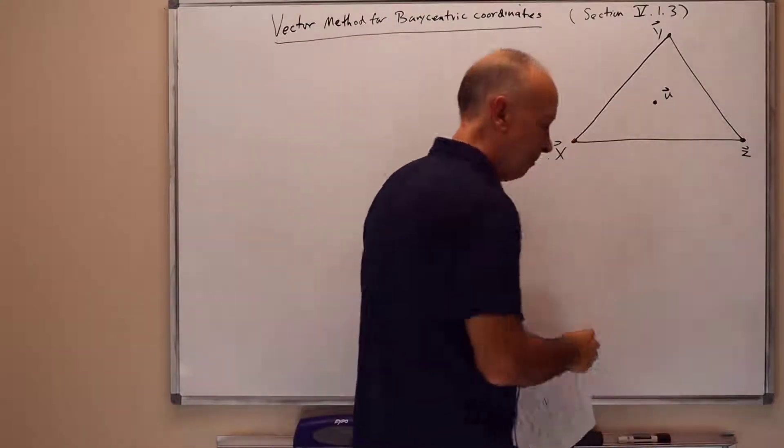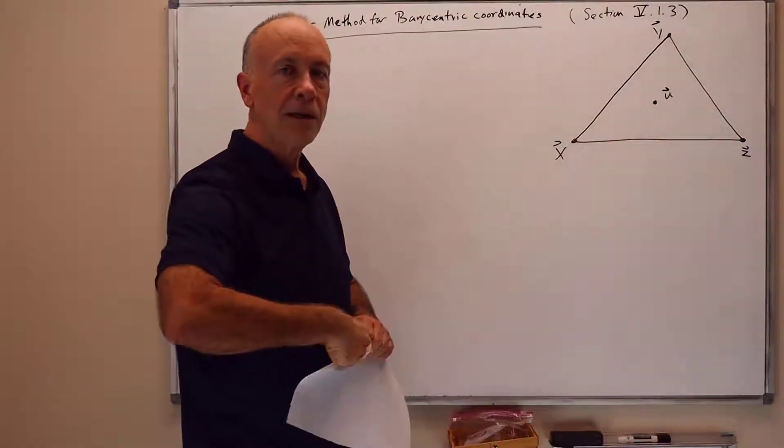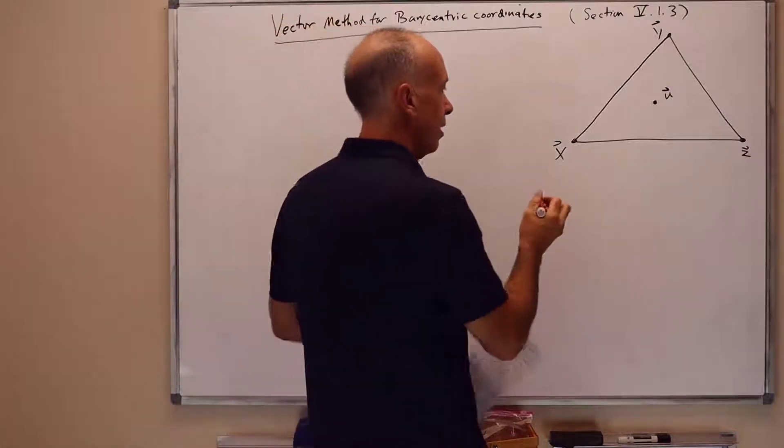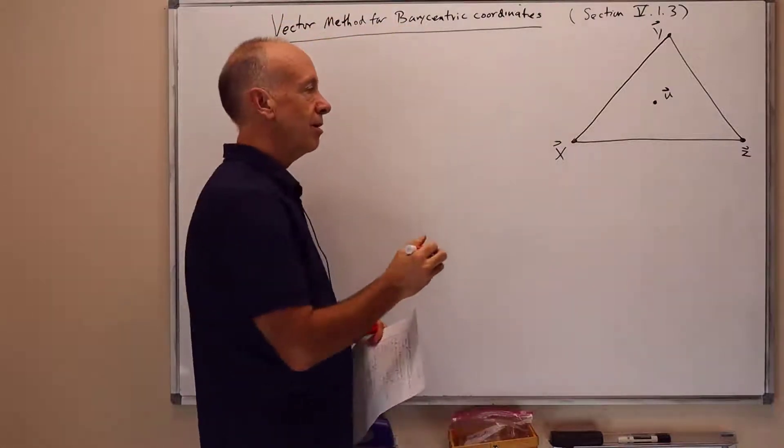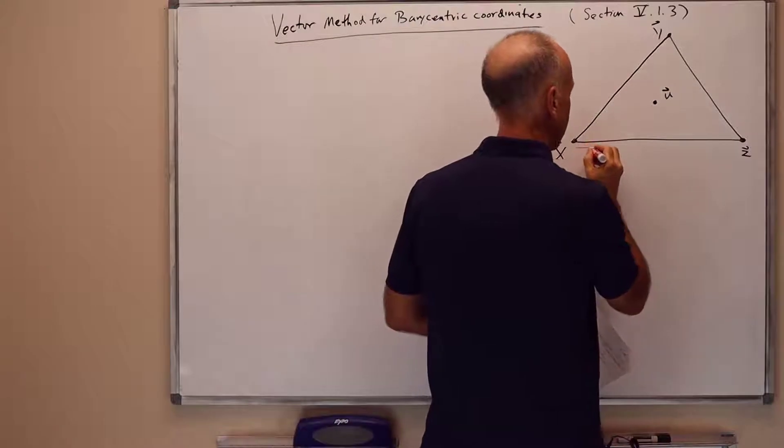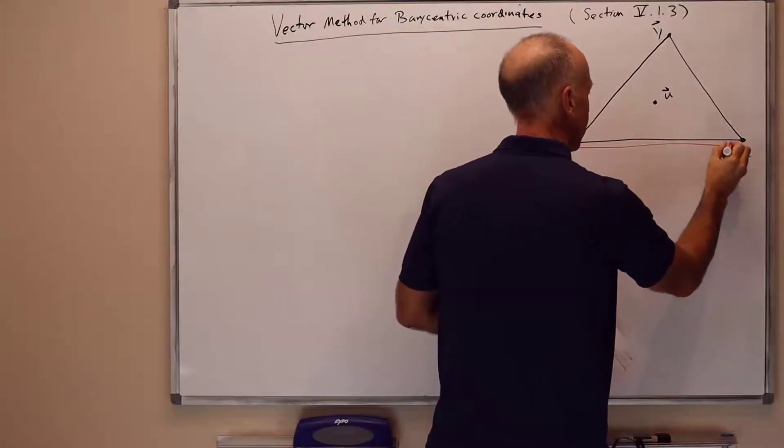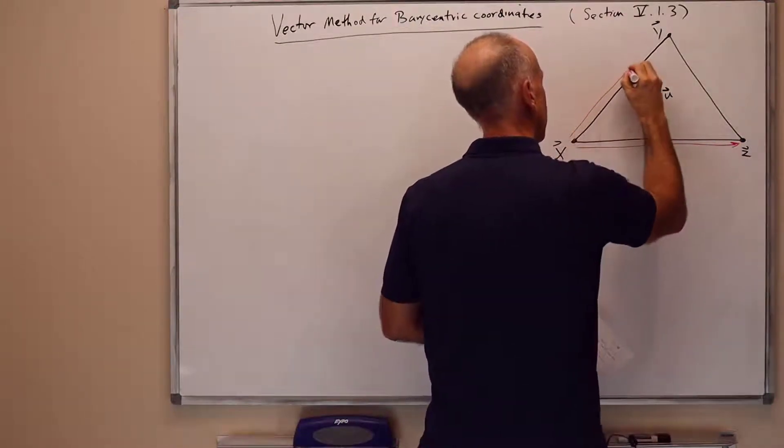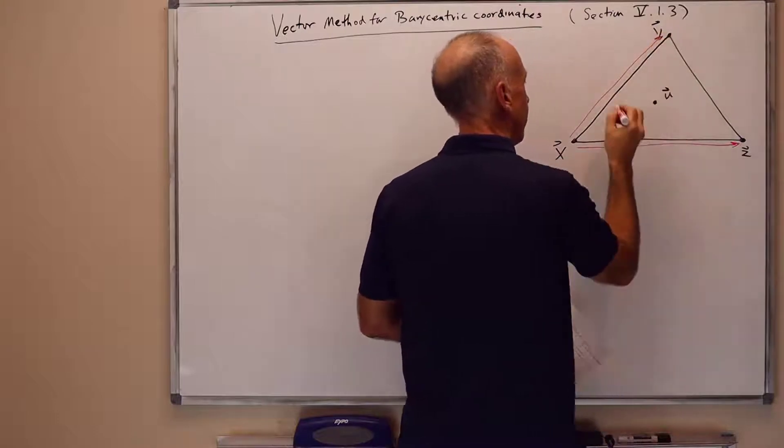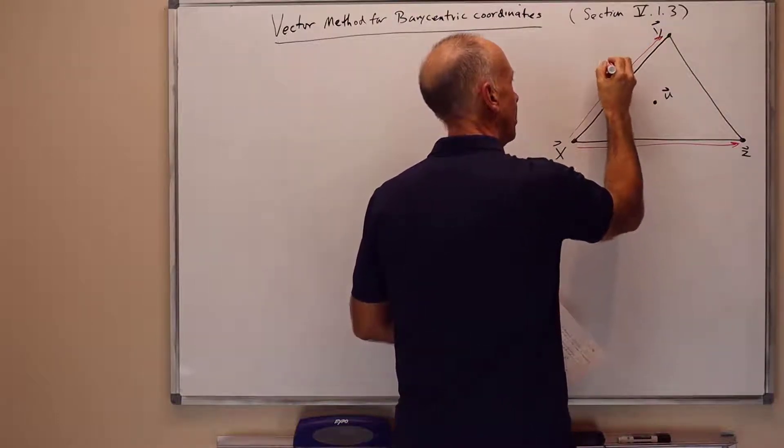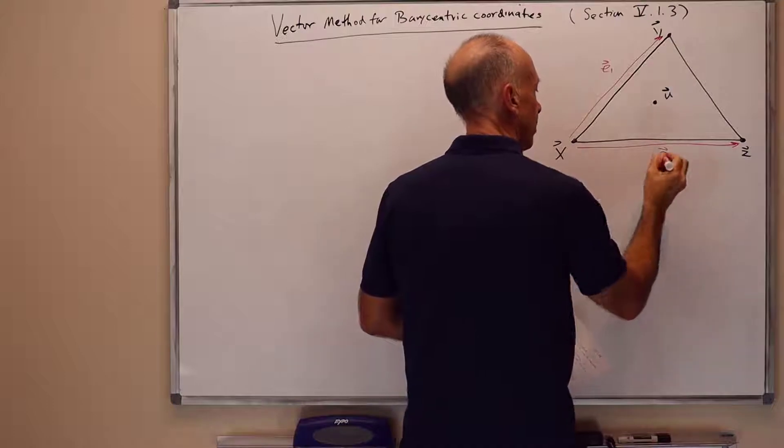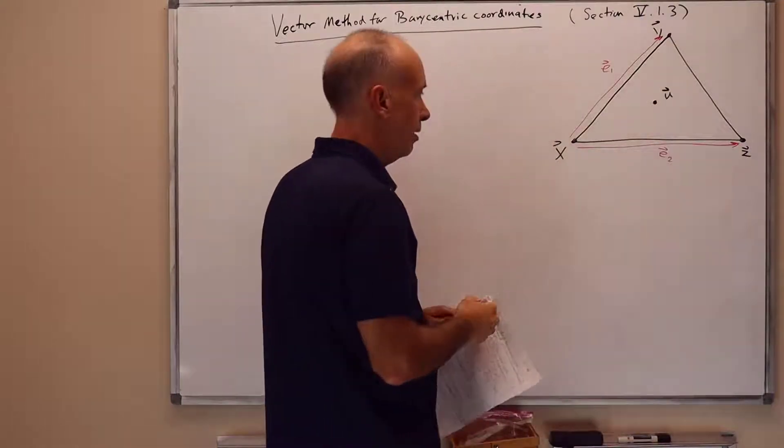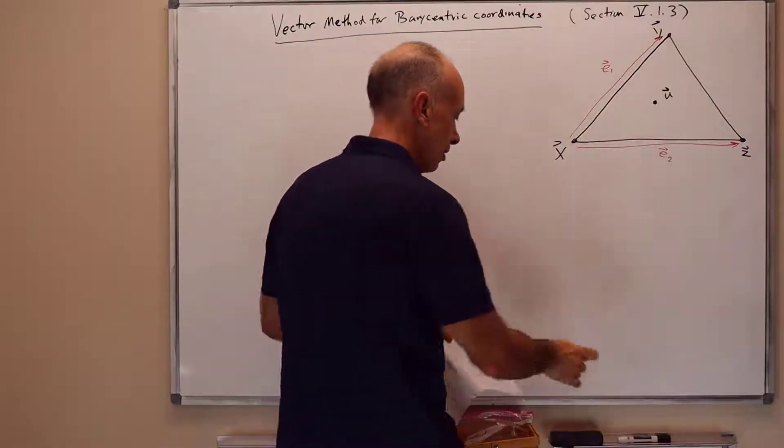But in fact the same formulas and constructions work for u anywhere in the plane containing the triangle. We want to define some auxiliary vectors to help with the computation. So in particular we'll take the vectors from x to y and from x to z.